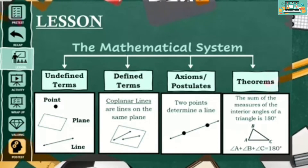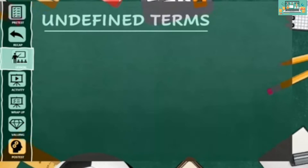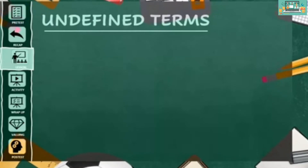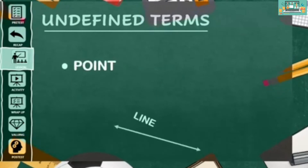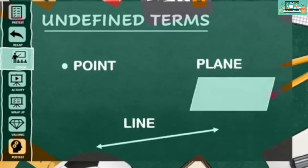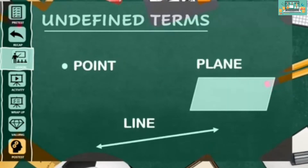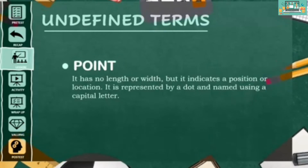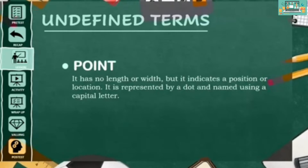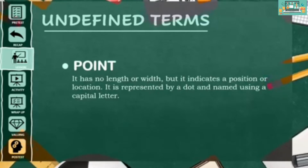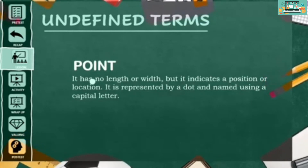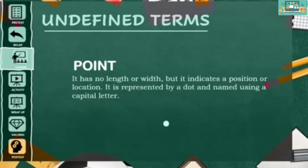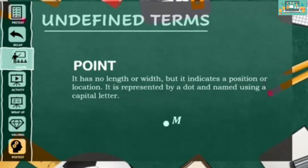For now, let us focus first on the undefined terms. Some of the undefined terms in geometry are point, line, and plane. Let us start with point. It has no length or width, meaning it has no size. It indicates a position or location in space. It is represented by a dot and named using a capital letter. For instance, we can name this point as point M.